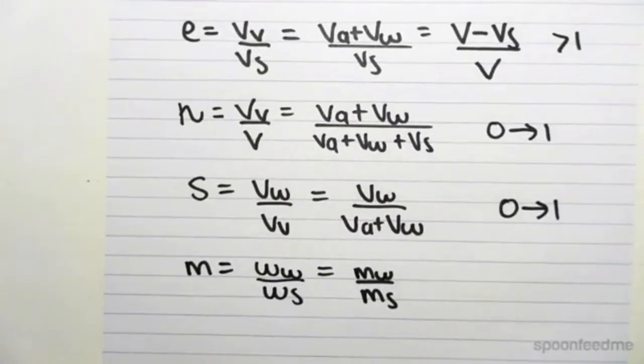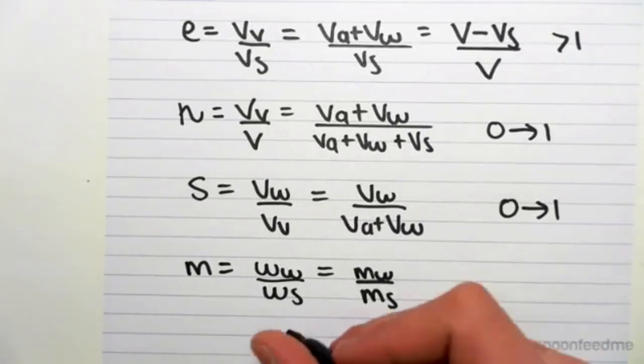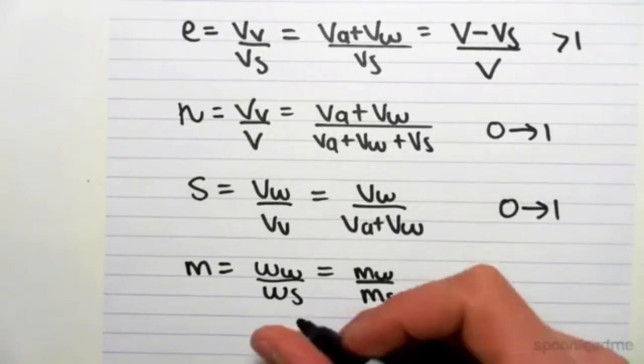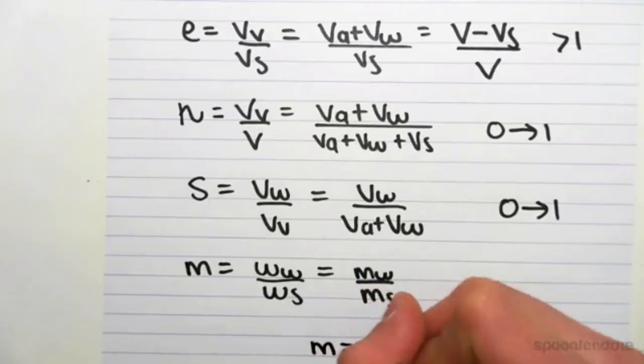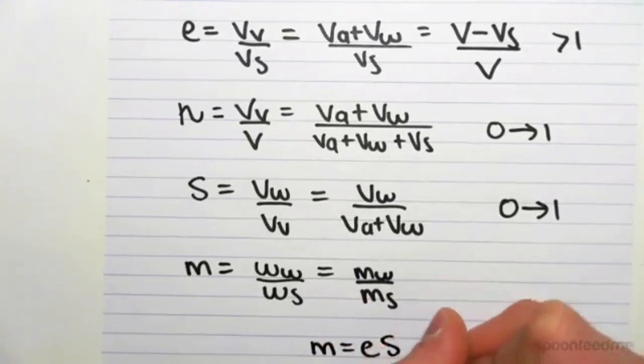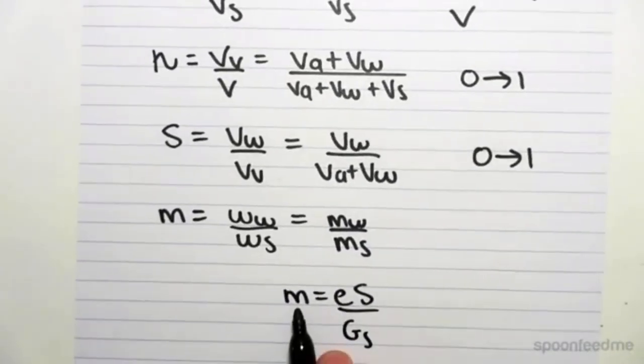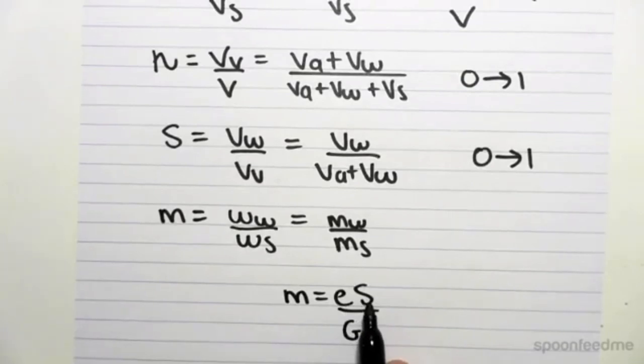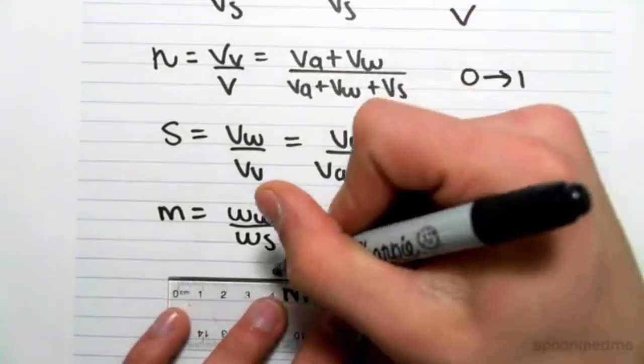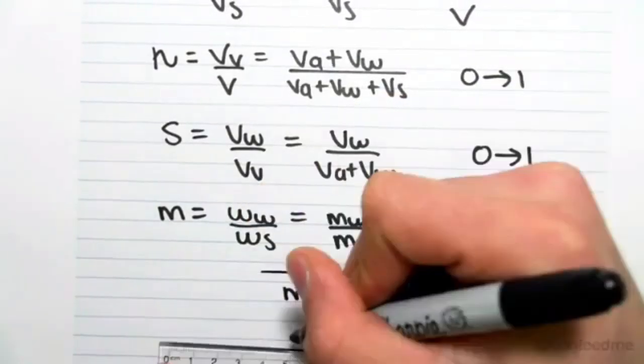And the final thing we're going to look at, I'm not going to derive it with you, but we're just going to be looking at this final relationship, which is between moisture content and saturation, where M equals E times S on specific gravity. So the moisture content equals the void ratio times the saturation divided by the specific gravity.